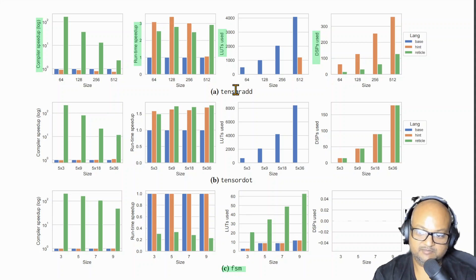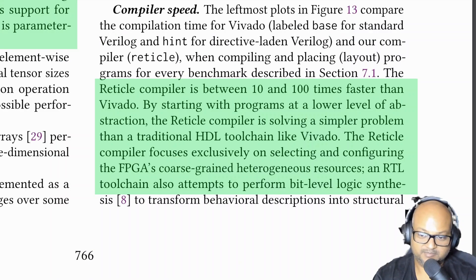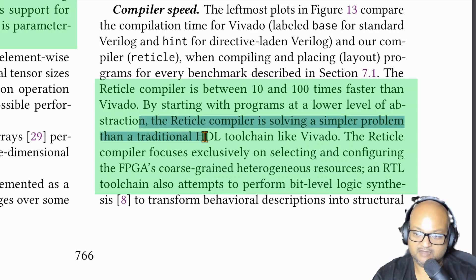And they had these three benchmarks that they were using: tensor add, tensor dot, and FSM or finite state machine. In terms of compilation speed, the Reticle compiler was between 10 and 100 times faster than the standard Verilog tool chain. The caveat being that the Reticle compiler is solving only a subset of what the entire tool chain works on.